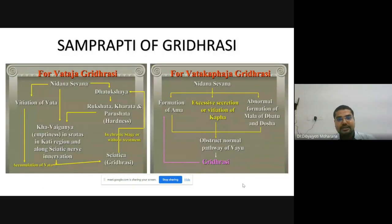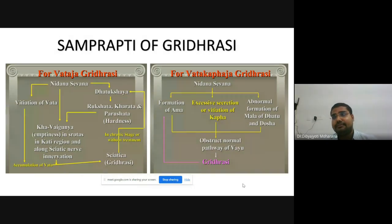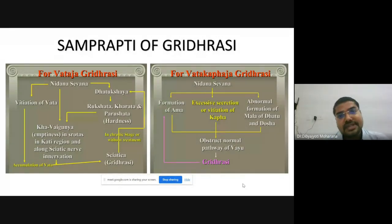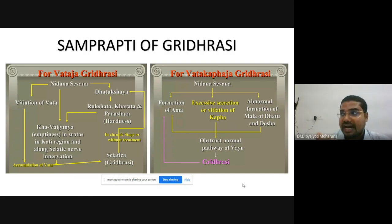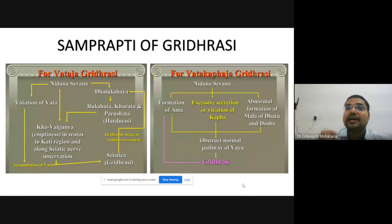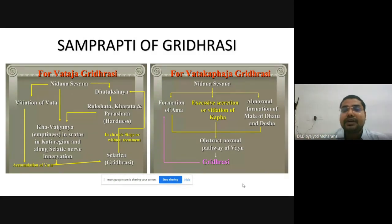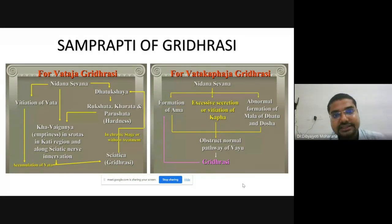Coming to the Samprapti of Gridhrasi: all types of Vatavyadhi have four basic types of Samprapti. A Vatavyadhi can occur due to Kevala Vata, or due to Samsarga with Vata-Pitta — in which case Pitta should be treated first, then Vata Dosha. If it is Kapha and Vata, then Kapha should be treated first, then Vata. If all three Doshas are involved, treat Pitta first, then Kapha, then Vata.